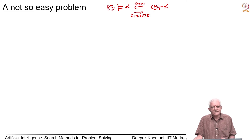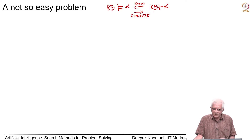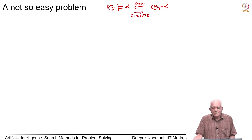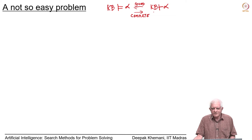We started looking at logic, then we looked at forward chaining and backward chaining, saw examples of both, and we saw that Prolog is a language which does backward chaining. Today we want to end on a note which cautions us about these two methods.